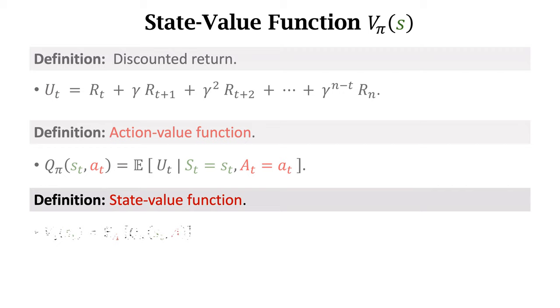The last concept, state value function V_π. V_π is the expectation of the action value function q_π. q_π depends on state s, action a, and policy π. We can treat action a as a random variable and take the expectation with respect to a. In this way, action a is eliminated. Let the resulting function be V_π. It is known as the state value function. It depends on state s and policy π. It's independent of action a.